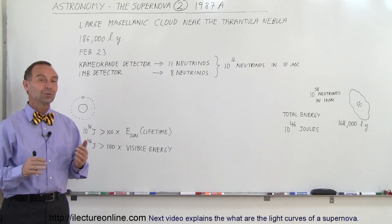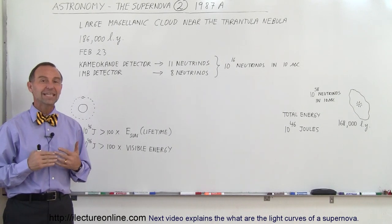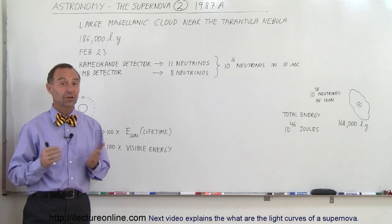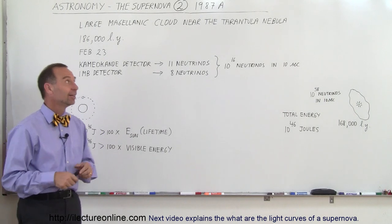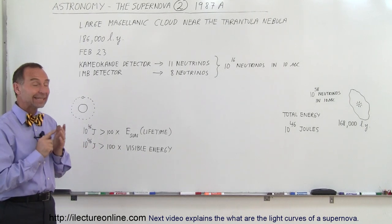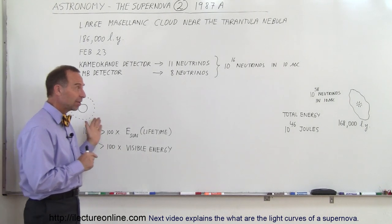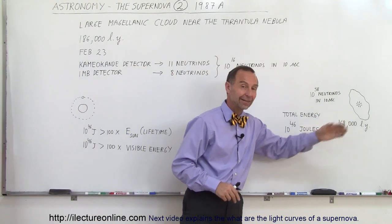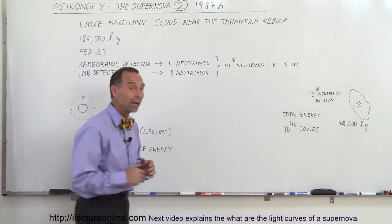Welcome to Electron Line and now to the supernova that was seen in 1987, called the 1987A supernova. That was very lucky for us because back in 1987, in the Large Magellanic Cloud, which is one of the neighboring galaxies to our galaxy, 168,000 light years away.